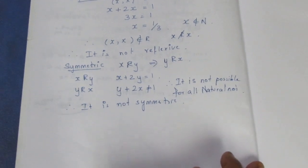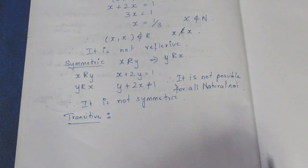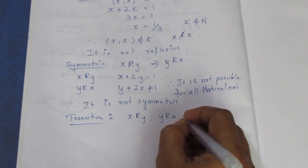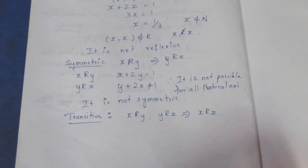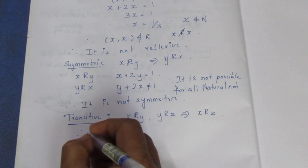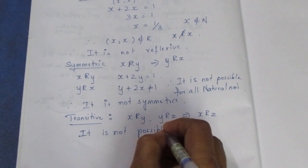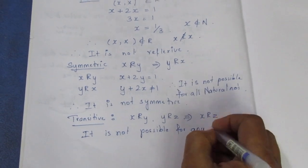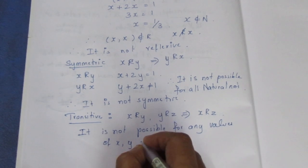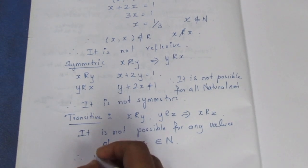Next, transitivity. Since this is an empty relation, we check if x related to y and y related to z implies x related to z. This condition is not possible for any values of x, y, z belonging to natural numbers. Therefore the relation is not transitive.